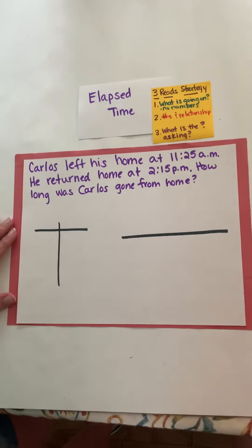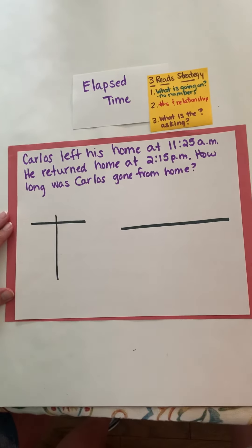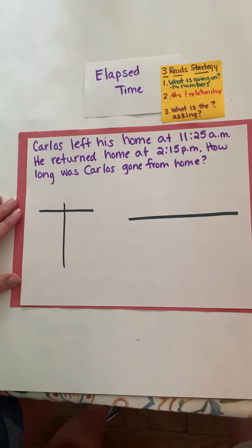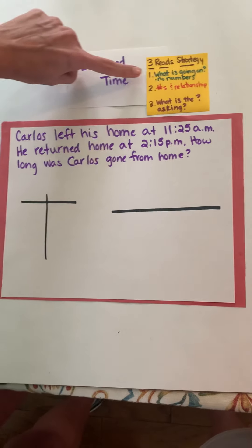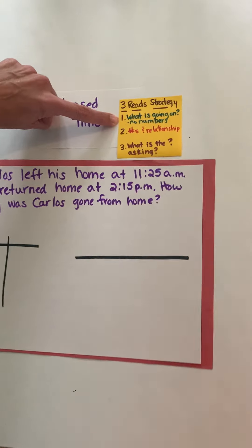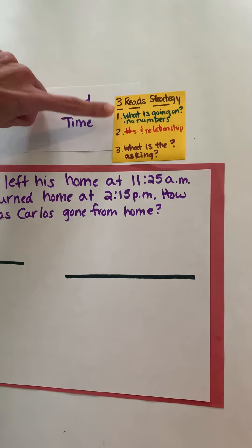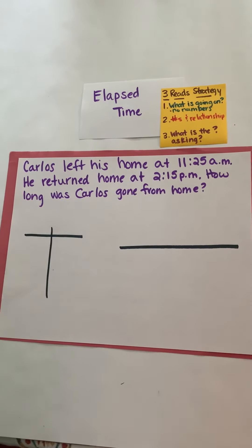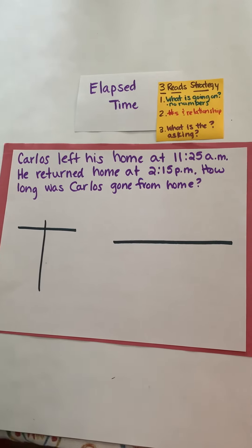So it says Carlos left his home at 11:25 a.m. He returned home at 2:15 p.m. So I read it the first time and I only want to talk about what's going on no numbers. So I know Carlos was at home and Carlos left home and then he came back.